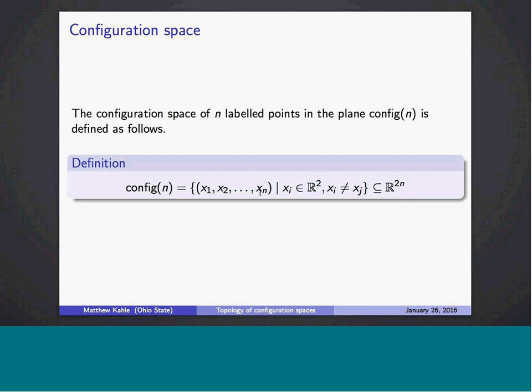One way people talk about this space is as a complex hyperplane arrangement. If we think of it as n points in the complex plane, then saying two points are the same means those two coordinates are equal — that's a hyperplane in this n-dimensional complex space. This particular arrangement is called the braid arrangement, and it's one of the first hyperplane arrangements you would study. There's a lot known about its topology — in a sense, everything is known.